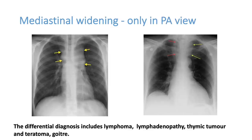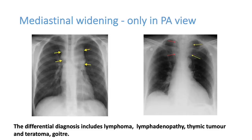This x-ray shows widening of the upper part of the mediastinum; other areas are normal. These types of lesions are mostly seen in lymphadenopathies. It can be due to TB, sarcoidosis, lymphoma, or tumors like thymic tumor, teratoma, glioma, or goiter. It can also sometimes be due to an aortic aneurysm. Aortic aneurysm lesions are very smooth, but here they are irregular, mostly because of lymphadenopathy.